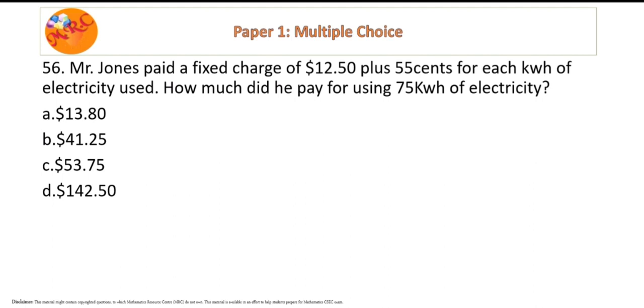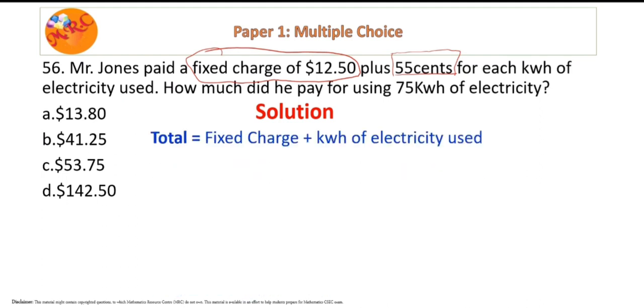For a solution, the first thing that I'd like to establish is the idea of him paying a fixed charge, right? So he's paying this fixed charge plus for every kilowatt of electricity use he's paying 55 cents. Good. So putting that together to find out his exact bill for that month or for any month, it's going to be the fixed charge plus the kilowatt of electricity used.